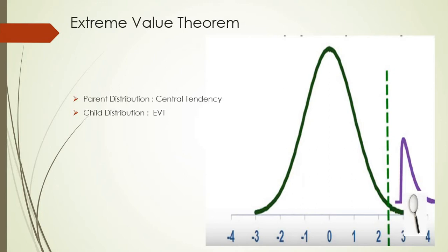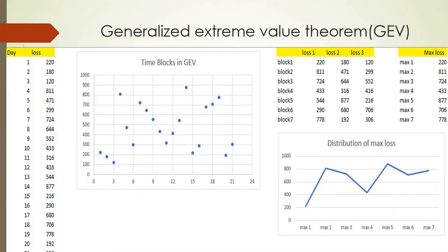So how are these extreme events defined by Extreme Value Theorem? There are two ways: one is Generalized Extreme Value theorem (GEV), and another is Peak Over Threshold (POT). We'll go through both of these.